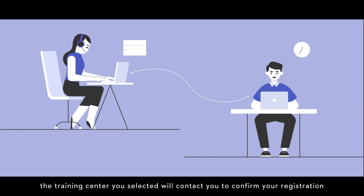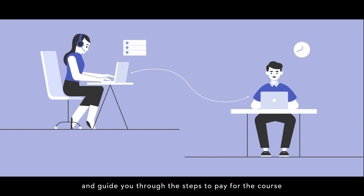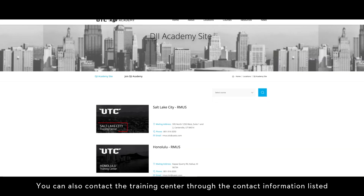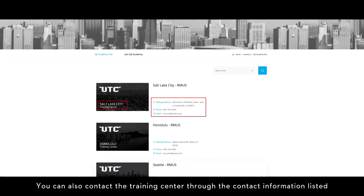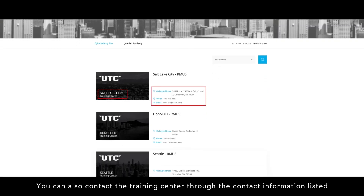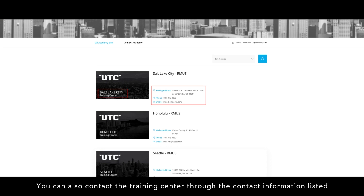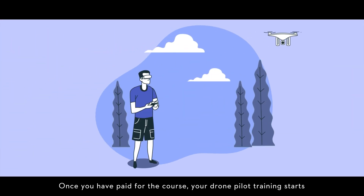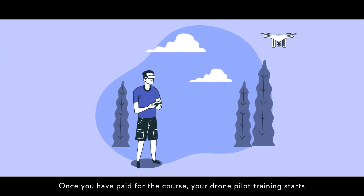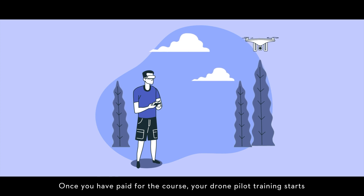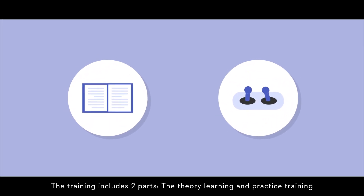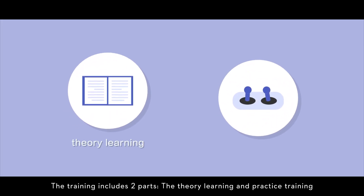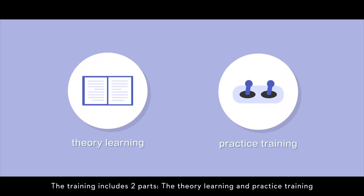After registering for the course, the training center you selected will contact you to confirm your registration and guide you through the steps to pay for the course. You can also contact the training center through the contact information listed. Once you have paid for the course, your drone pilot training starts. The training includes two parts: the theory learning and practice training.